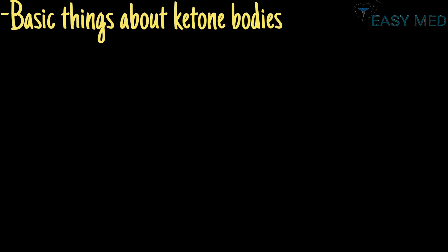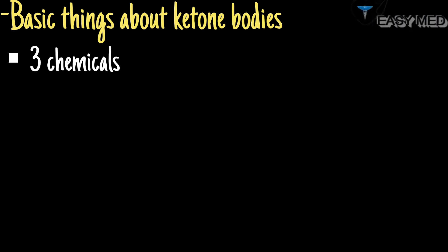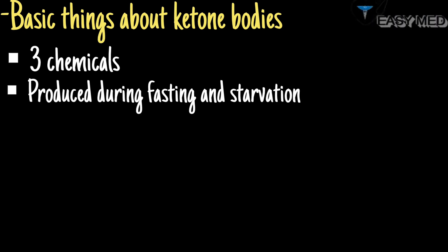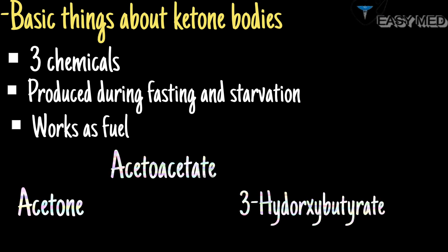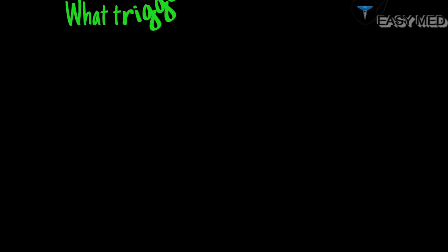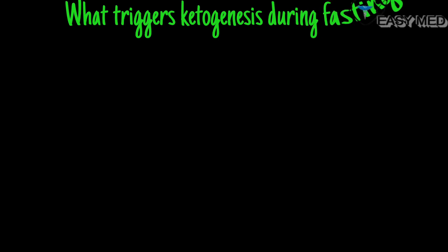Ketone bodies are simply three chemicals that are produced in the body during fasting or starvation to meet the body's energy needs. The three ketone bodies are acetone, acetoacetate, and 3-hydroxybutyrate, which is the most abundant one. That brings me to the question: what really happens during fasting that leads to ketogenesis in the first place?